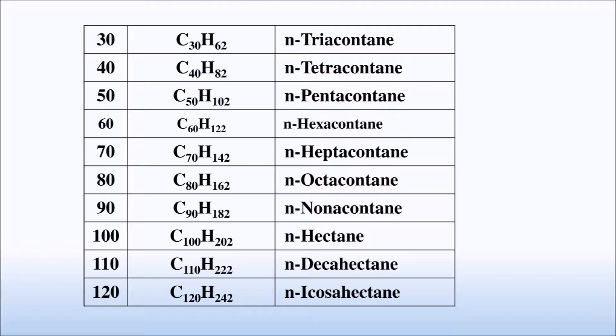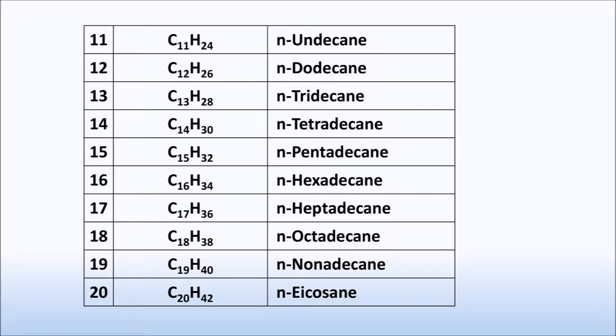110 carbons is decahectane, 120 is icosahectane, and so on. Let's now review lighter alkanes: the 10th is decane.